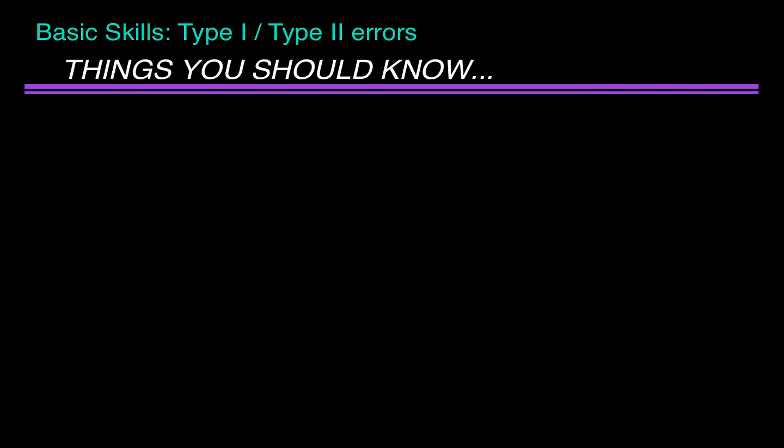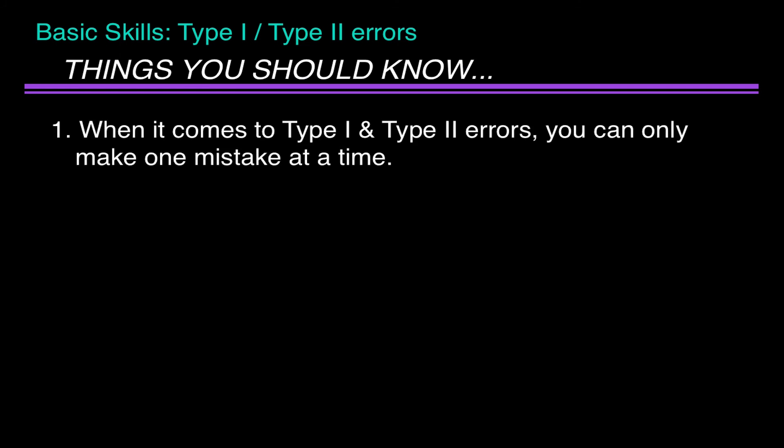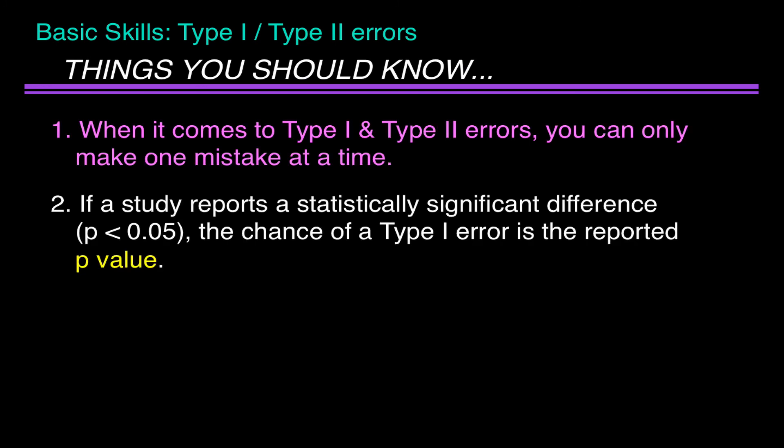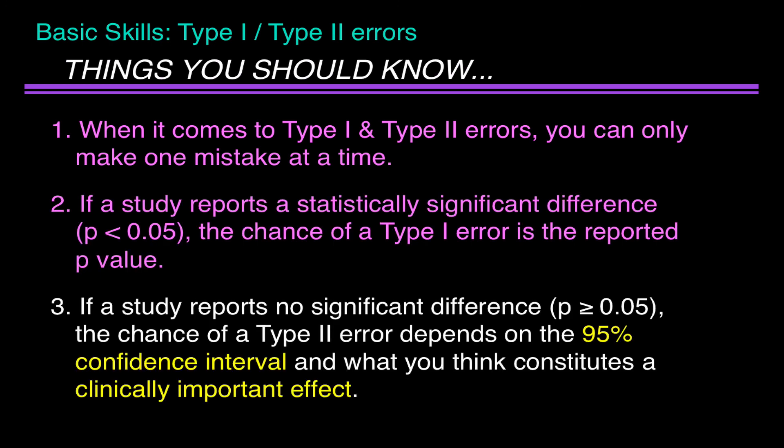Here are some more things you should know: 1. When it comes to type 1 and type 2 errors, you can only make one mistake at a time. 2. If a study reports a statistically significant difference — that is, the p-value is less than 0.05 — the chance of a type 1 error is the reported p-value. Finally, if a study reports no significant difference (p greater than or equal to 0.05), the chance of a type 2 error depends on the 95% confidence interval and what you think constitutes a clinically important effect.